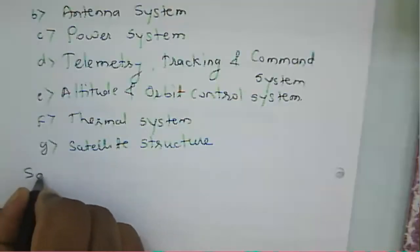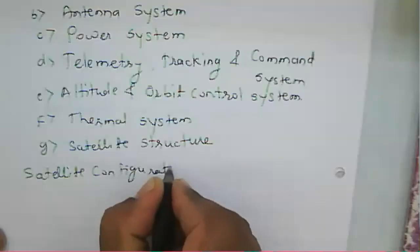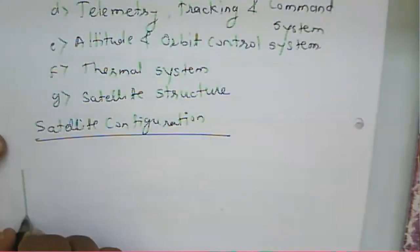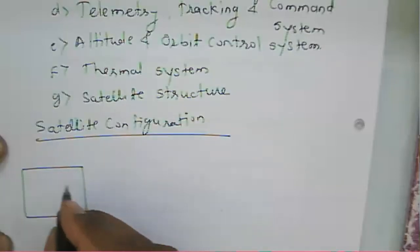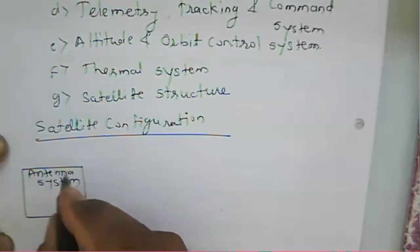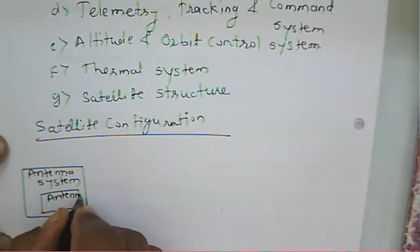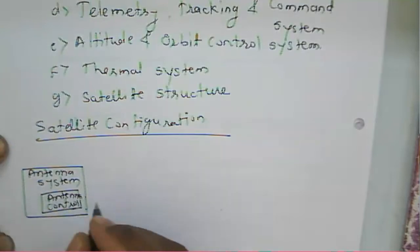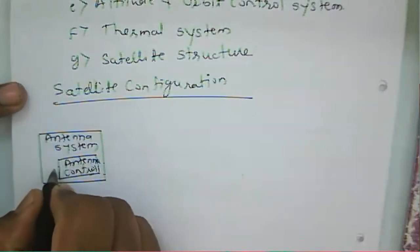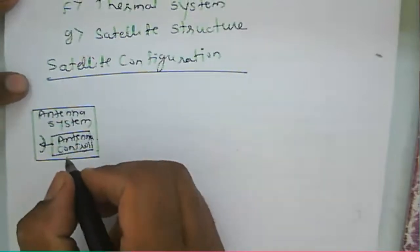If you see the satellite configuration, you will find those subsystem components. In a satellite configuration, it has an antenna system. Generally, we do not require only one antenna — we require antennas for transmission as well as for sending the TTC command. So various antennas are used in the antenna system.